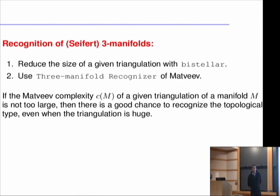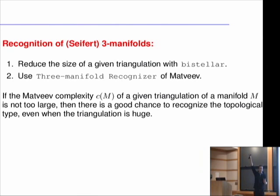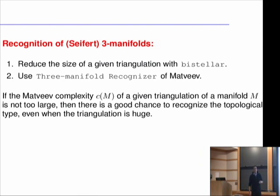It is possible to recognize more manifolds, not only the 3-sphere. For basic examples it is enough to know a minimal triangulation with the correct topological type: start with your test object, decrease the size, and if you get something combinatorially isomorphic to your reference object you are done. For more complicated 3-manifolds you can start with a reduction and then in a second step use a 3-manifold recognizer such as Matveev's.